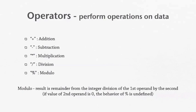Modulo is the result—the result is the remainder from integer division of the first operand by the second. So if it was 15 divided by 4, 4 goes into 15 three times with a remainder of 3. So the modulo for that would be 3. So it's really just the remainder of division of integers. If the value of the second operand is 0, the behavior of modulo is undefined because you can't divide something by 0.